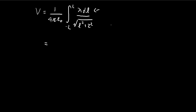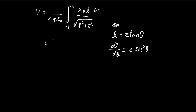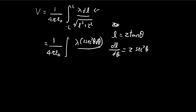The next step in solving this is to use substitution. We're going to let L be equal to Z tangent theta, and this will help us simplify the expression quite a bit. Using the standard procedure for substitution, DL becomes Z secant squared theta d-theta. For the denominator, we get Z squared times the quantity 1 plus tangent squared theta. That is equal to secant squared theta, which you can prove using the identity sine squared theta plus cosine squared theta equals 1.